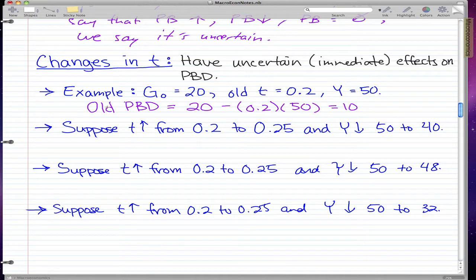Our example starts with G0 being 20, old tax rate being 0.2, and our total income Y equaling 50. Now, calculating that out, if you just plug it into our formula, we'd get 10. And that would be our old PBD that we'll be comparing to.